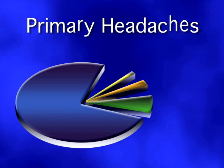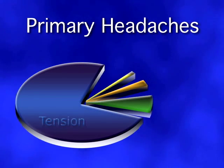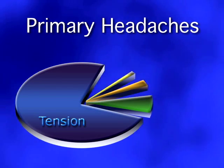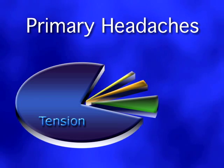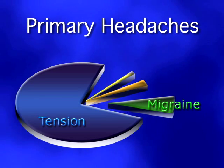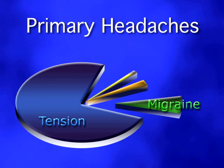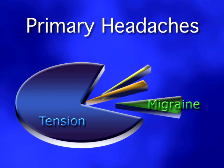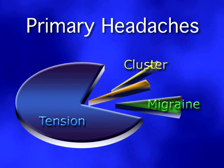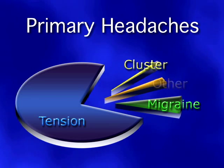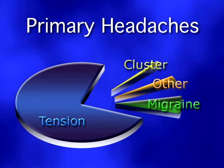There are three major categories of primary headache. Tension-type headache accounts for approximately three-quarters of all headaches. Migraine headache accounts for 10% of all headaches. Cluster headaches account for 1%, and a variety of other headaches account for 4% of all headaches.